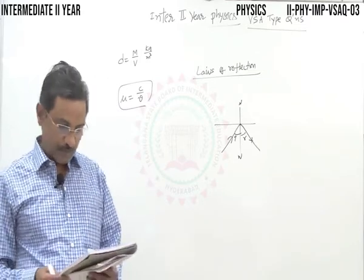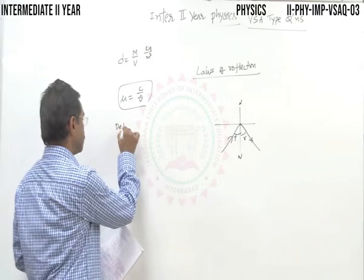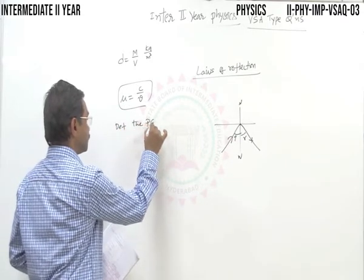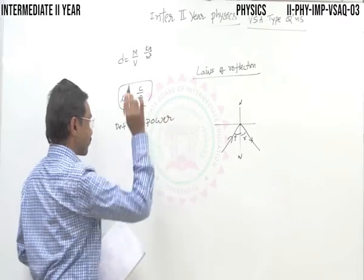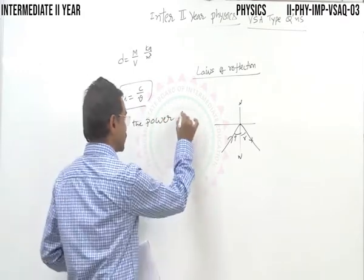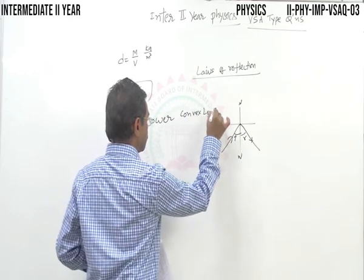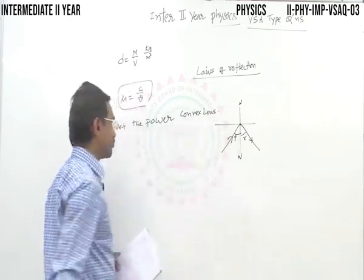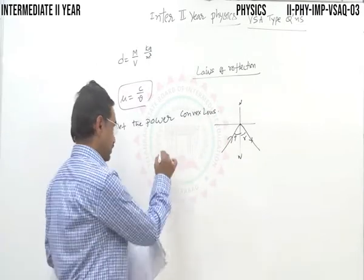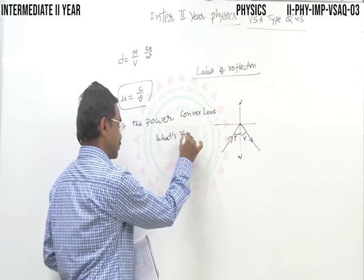Next, define the power of a convex lens — this is again one of the important questions. Define the power of a convex lens and state its units.